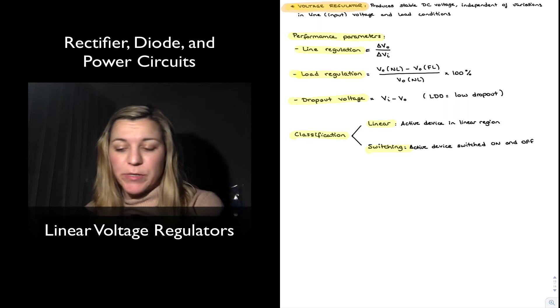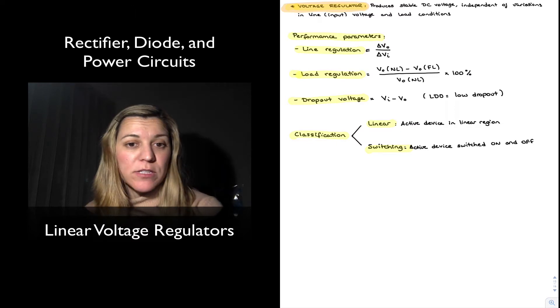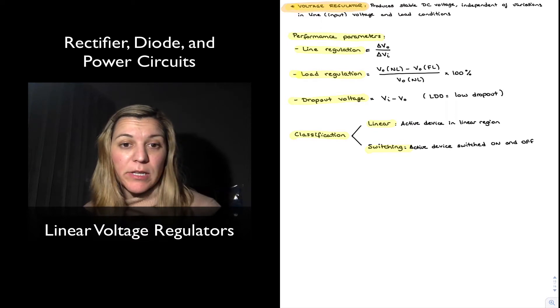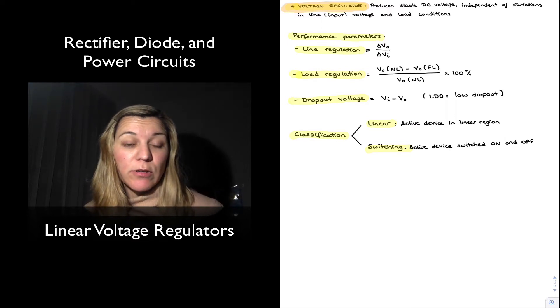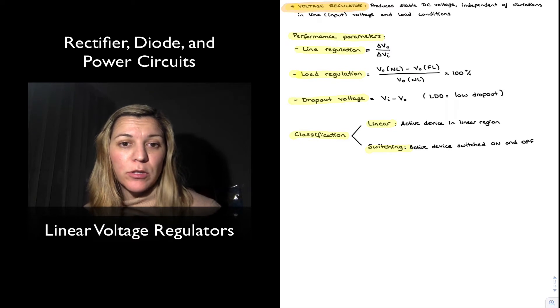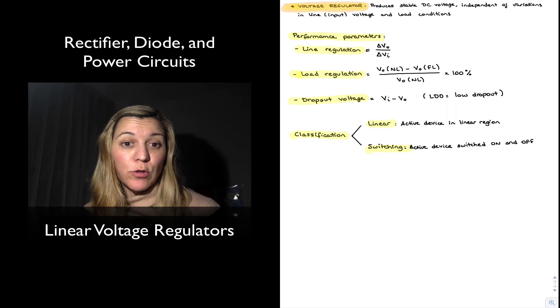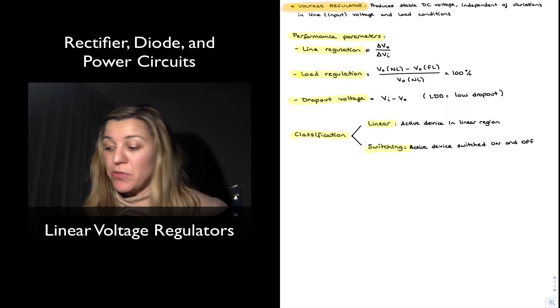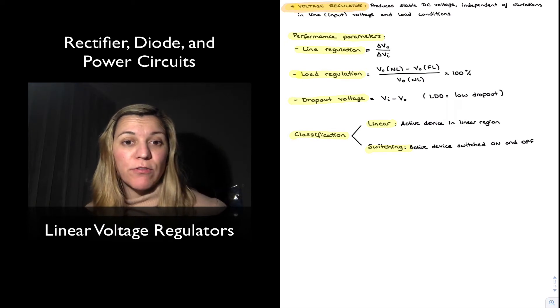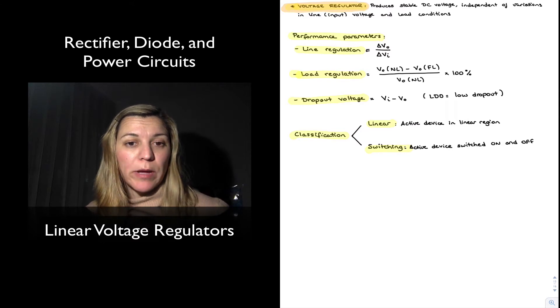Oftentimes line regulation will also be expressed as a percentage. Another common one is the dropout voltage, which is simply the delta between the unregulated input voltage and the output voltage. The reason why that is important is because typically the smaller the dropout voltage, the better the power efficiency of the regulator. Typically for most linear regulators the dropout voltage tends to be around two volts, but there are now a new family of linear regulators which are LDO or low dropout regulators, and so that amount can be decreased substantially.